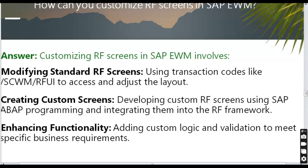How can you customize RF screens in SAP EWM? Customizing RF screens involves modifying standard RF screens using transaction code SCWMRFUI to access and adjust the layout, creating custom screens by developing custom RF screens using SAP ABAP programming and integrating them into the RF framework, and enhancing functionality by adding custom logic and validation to meet specific business requirements.